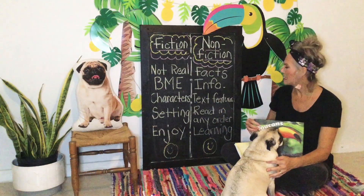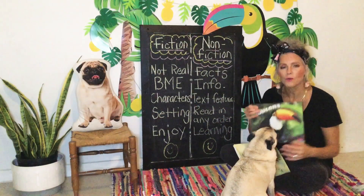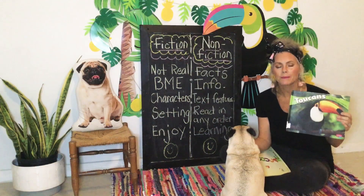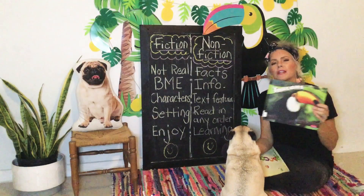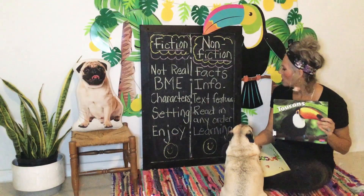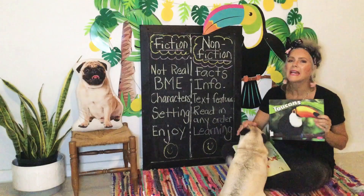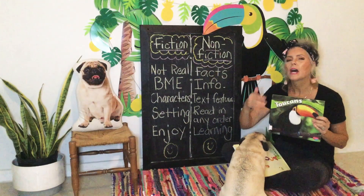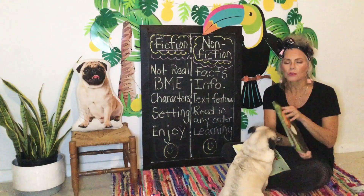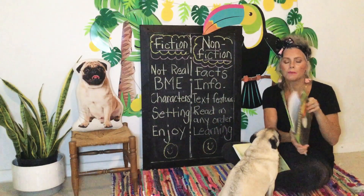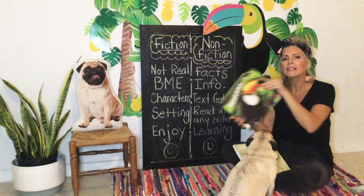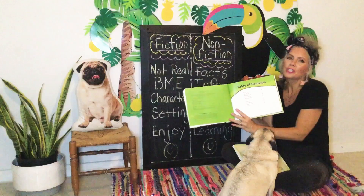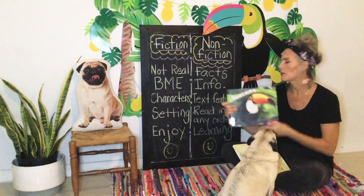Non-fiction books have text features in them — photographs, table of contents, glossary, maps. Those are all text features that we saw yesterday in the book about toucans. You can read a non-fiction text in any order, so it doesn't have a beginning, a middle, and an end. If you wanted to just read about what toucans eat, you can go to the table of contents, find that page, and start reading there. You don't have to go in order.